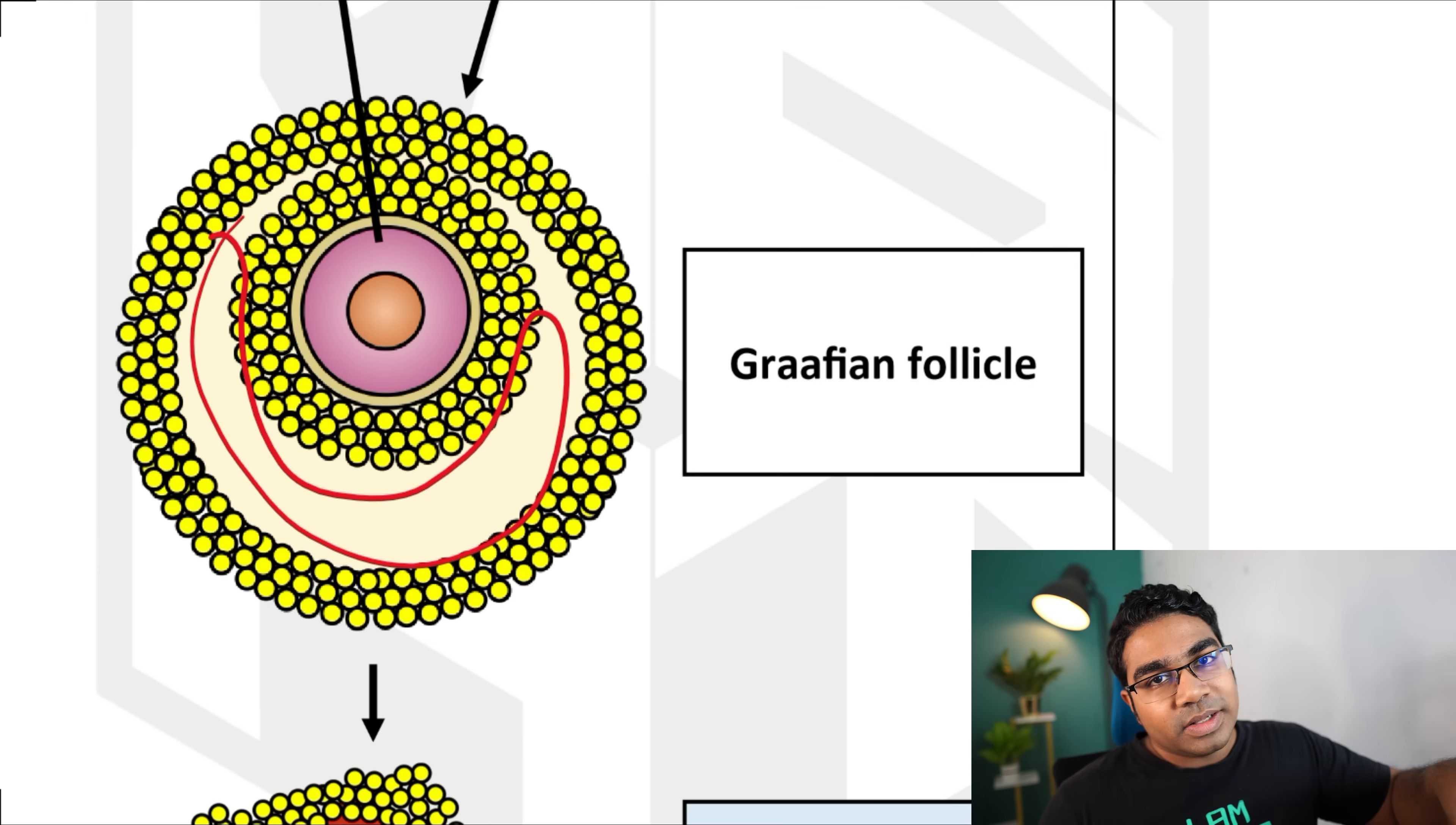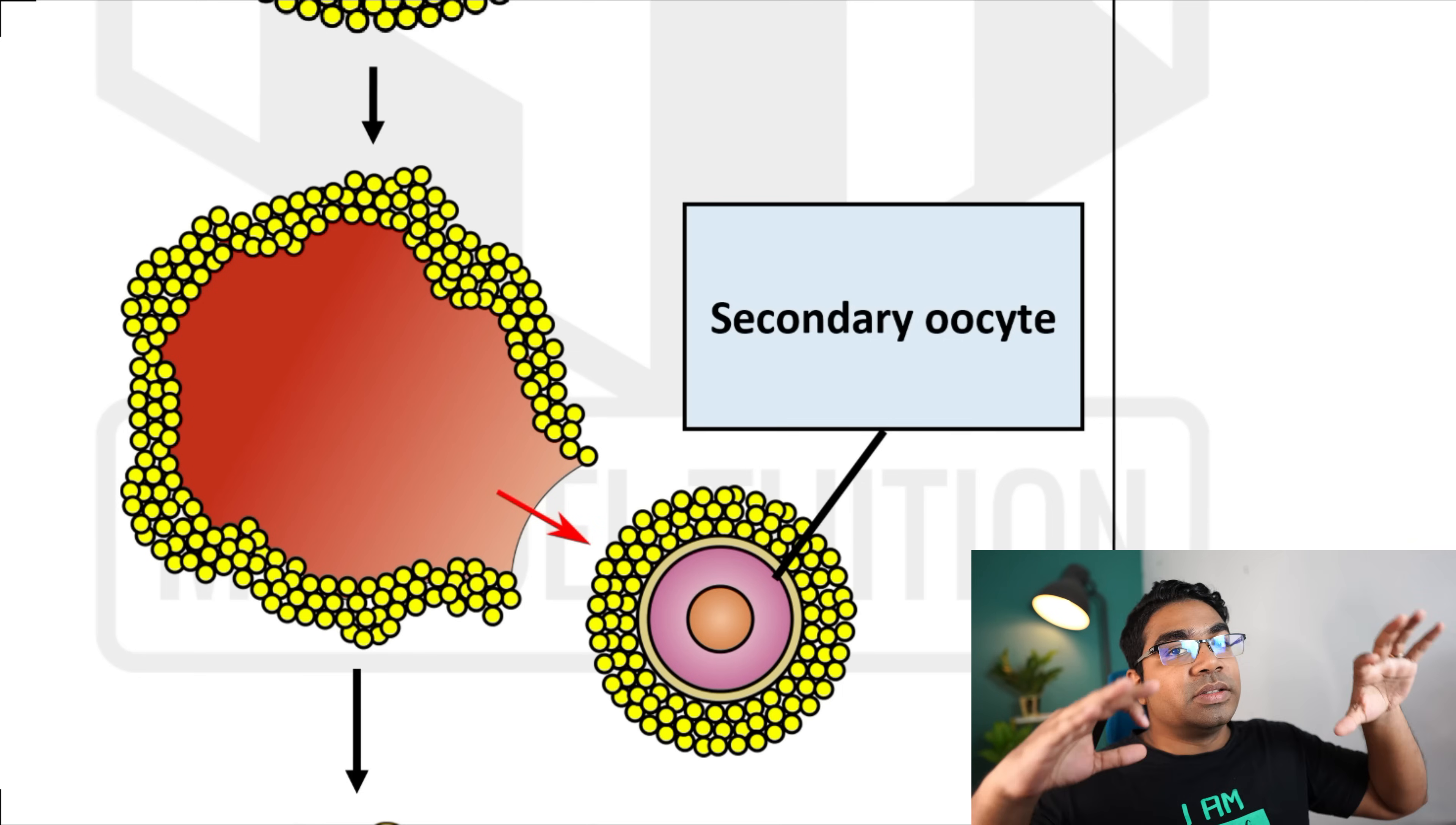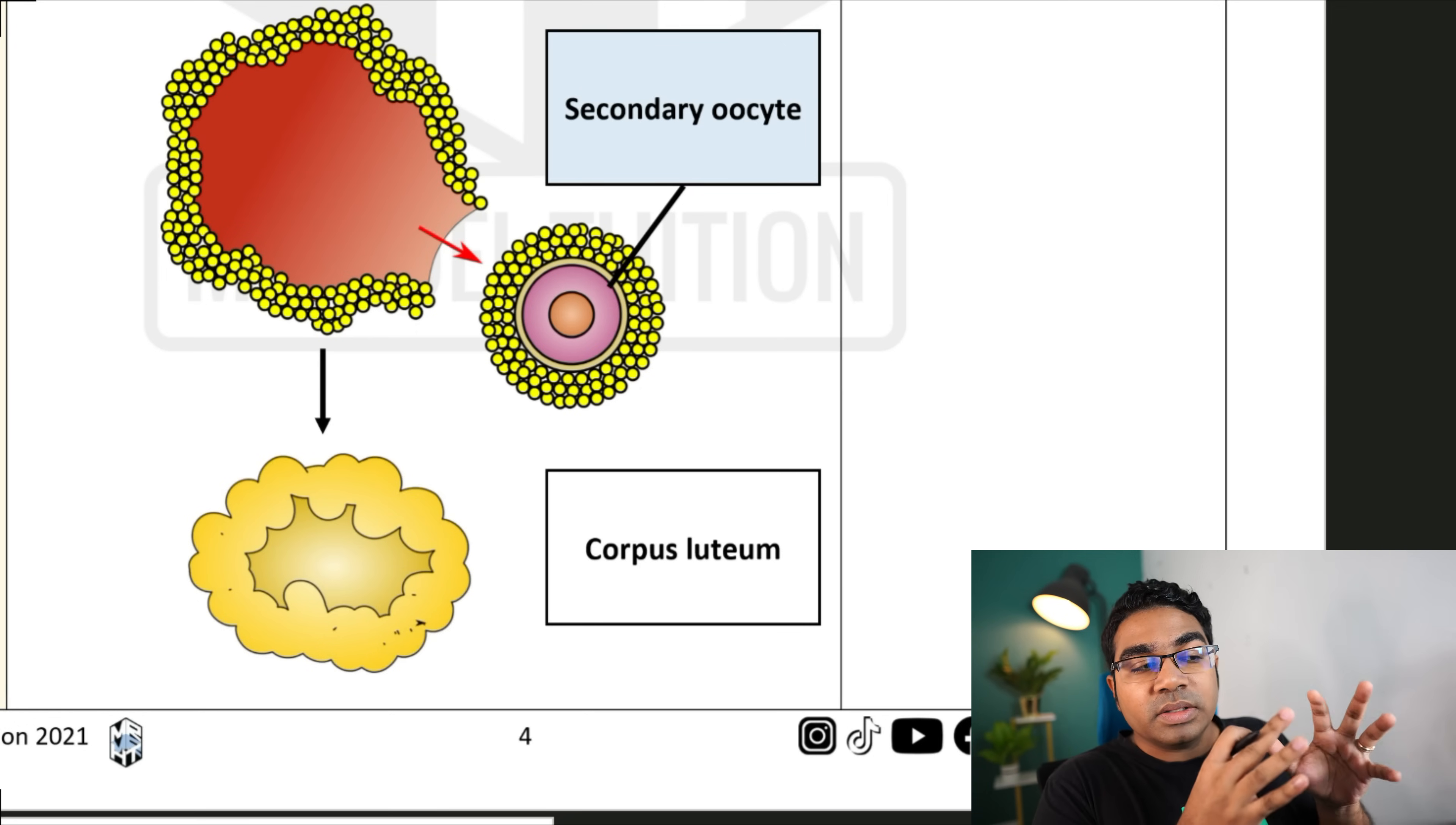So now the graafian follicle is ready to release the secondary oocyte into the fallopian tubes from the ovaries. This occurs during ovulation. So during ovulation, the secondary oocyte is released. Now what's left is the follicle cells. And these follicle cells are going to develop into what we call the corpus luteum. Corpus luteum stands for yellow body. It is a bundle of cells which is going to be responsible for producing progesterone.